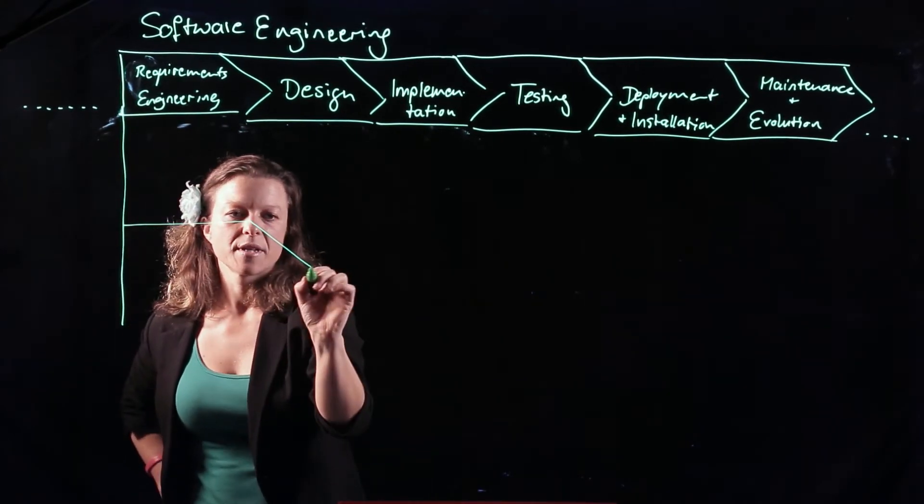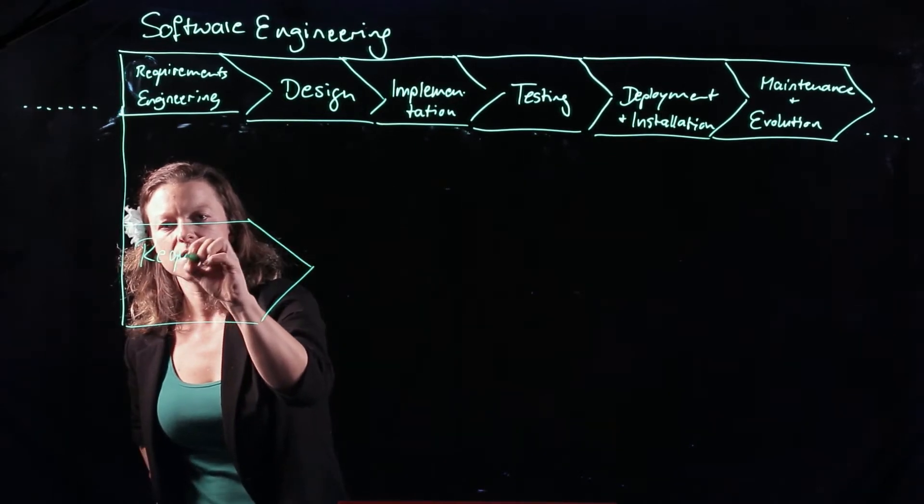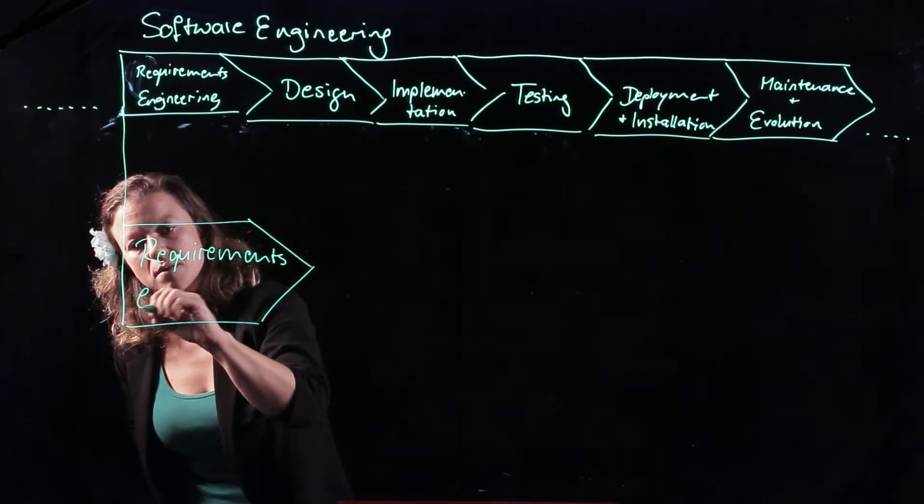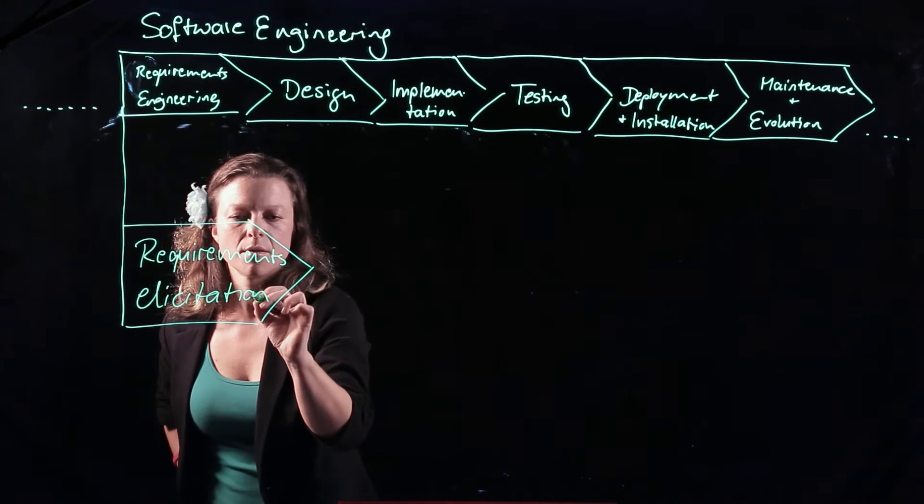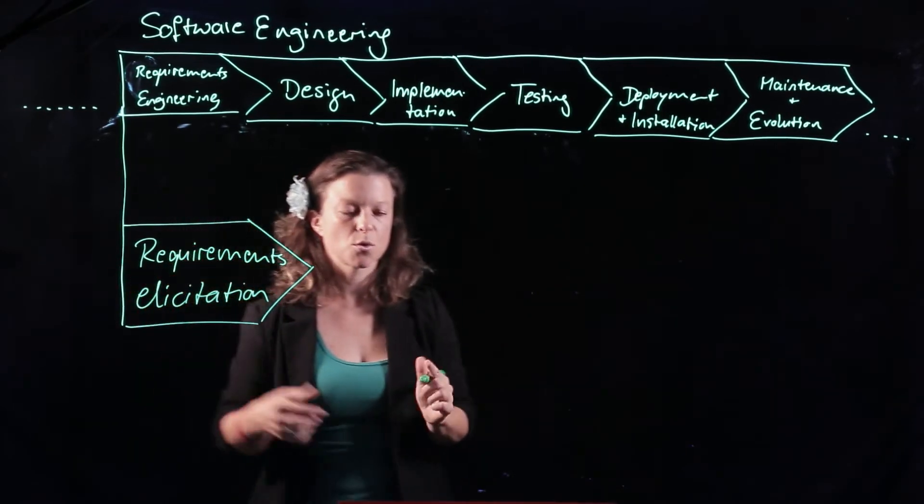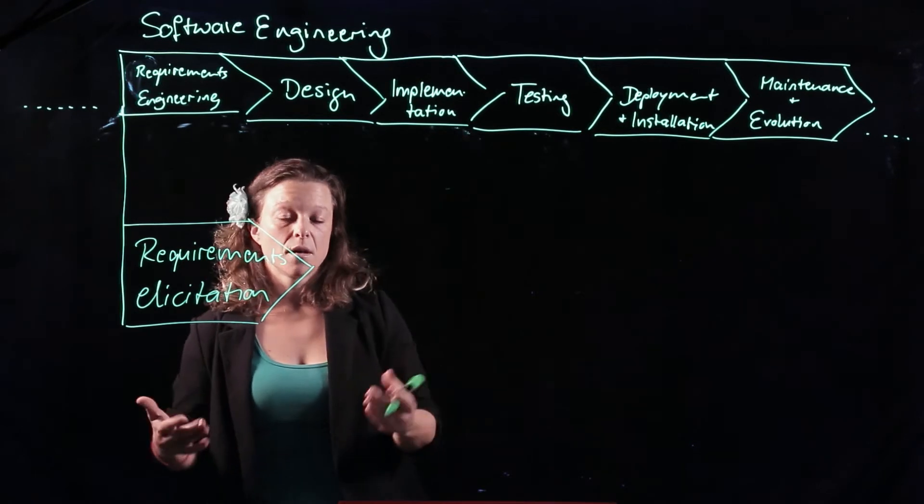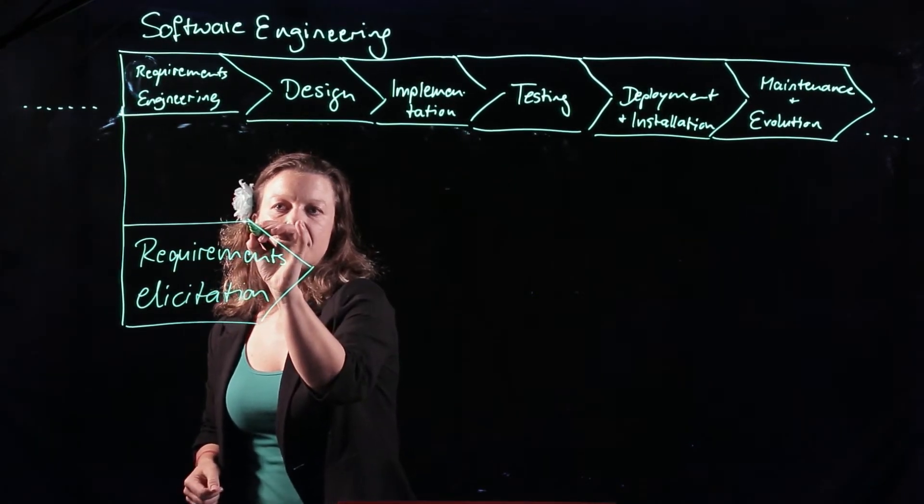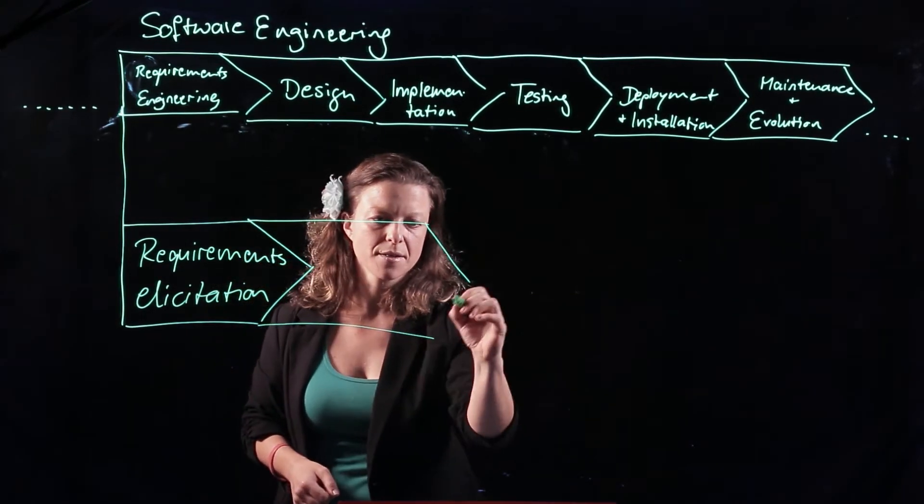Requirements engineering has four major phases. The first one is requirements elicitation. This means I ask stakeholders for their wishes, their constraints. I find out about their needs.